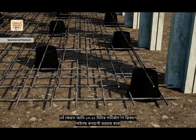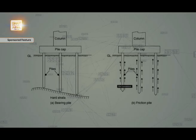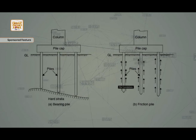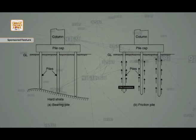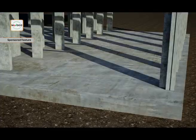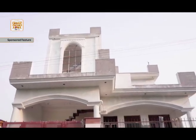In this case, we prefer going down maybe 10 to 12 meters and use a concept called friction piles. Those piles resist the loads depending upon their length and diameter. We choose an adequate diameter and length to get the required strength for the foundation.